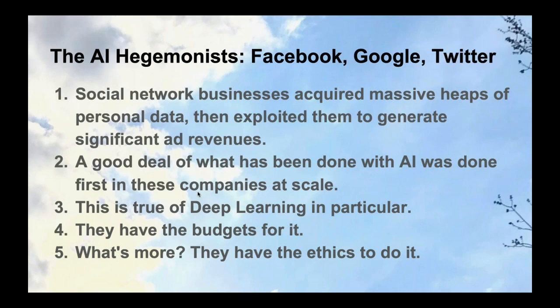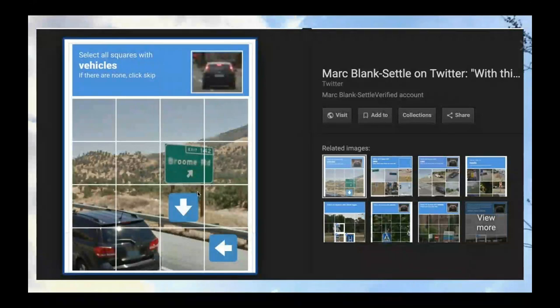These big players have some interesting ethical perspectives in terms of what they can do with your data, and that's going to be hashed out over the next couple of years. Here's something fascinating: you've probably seen a CAPTCHA — LinkedIn uses it a lot — where it says 'select all squares with vehicles.' That's actually a deep learning module run by Google. When you work on it, you're feeding inputs into a deep learning module for self-driving cars. It's essentially a crowd-sourced engine for AI training.